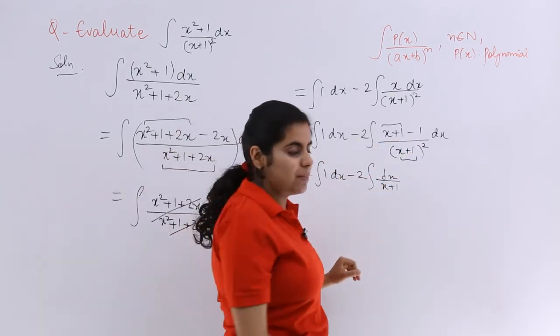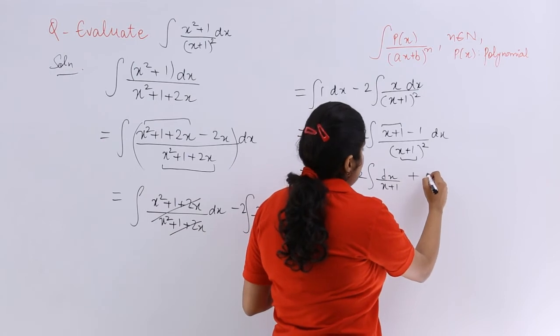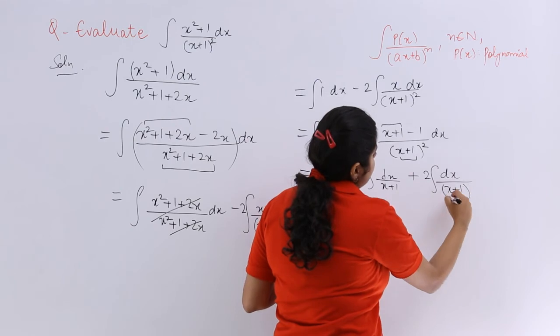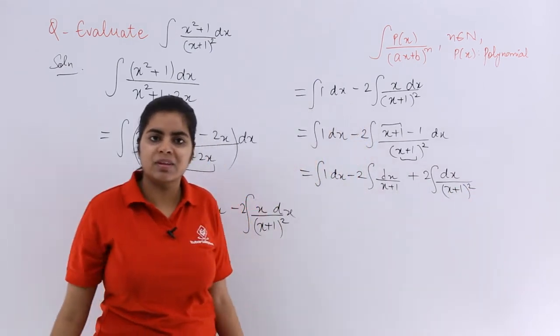Then it is minus minus becoming plus. So plus 2, integration dx upon (x + 1) whole square.